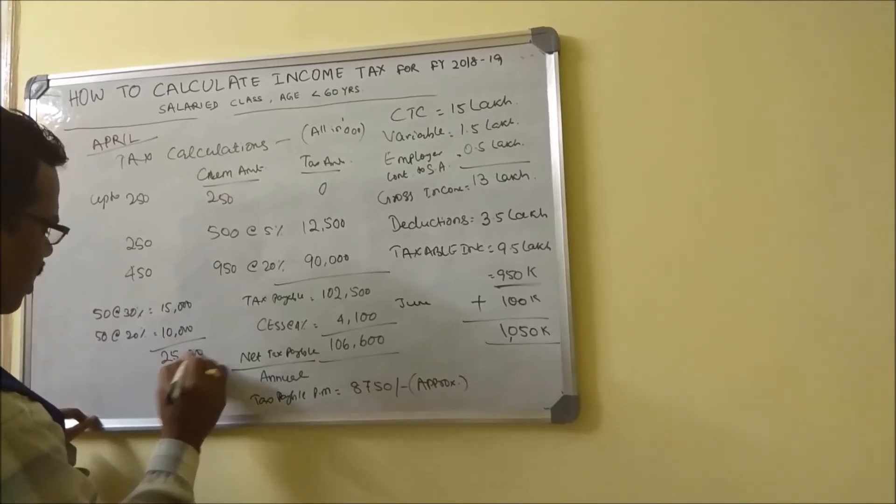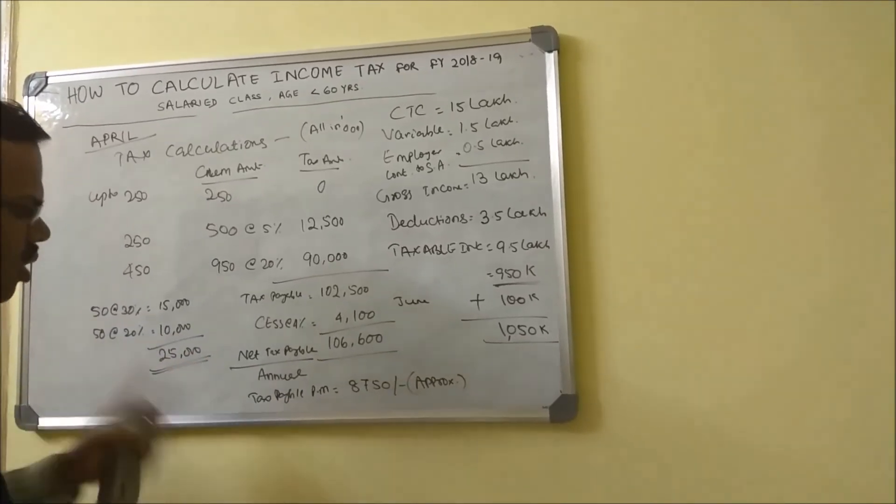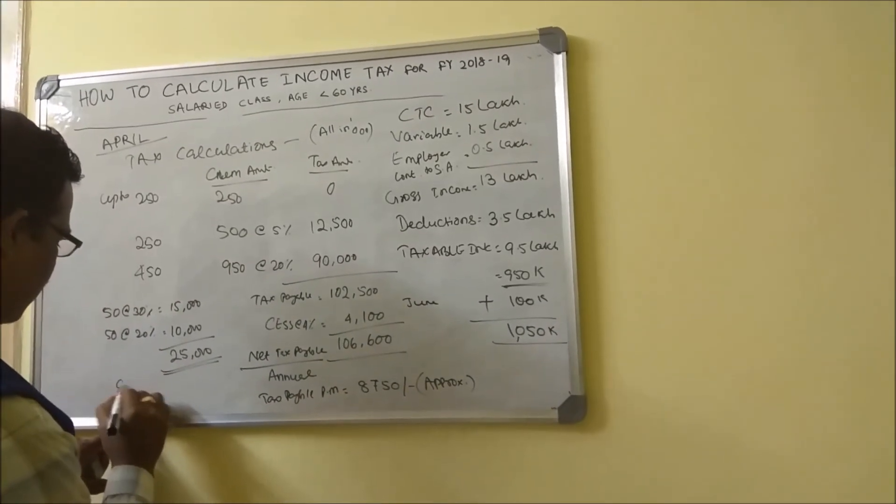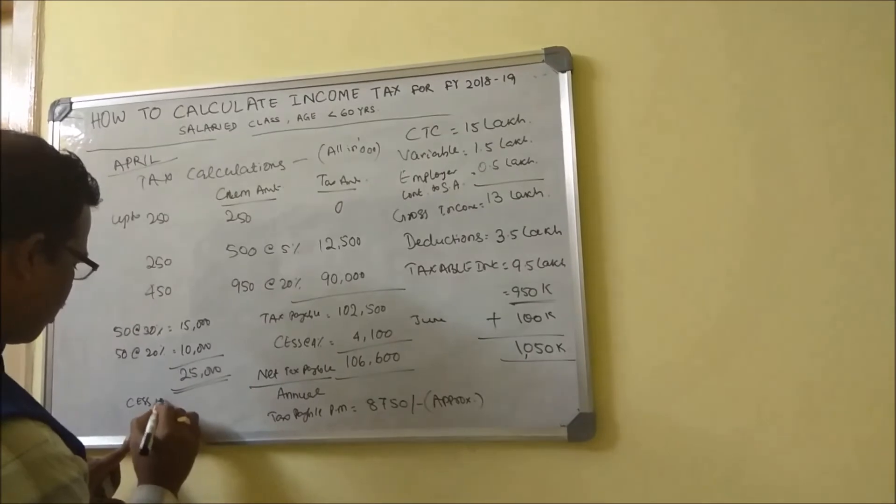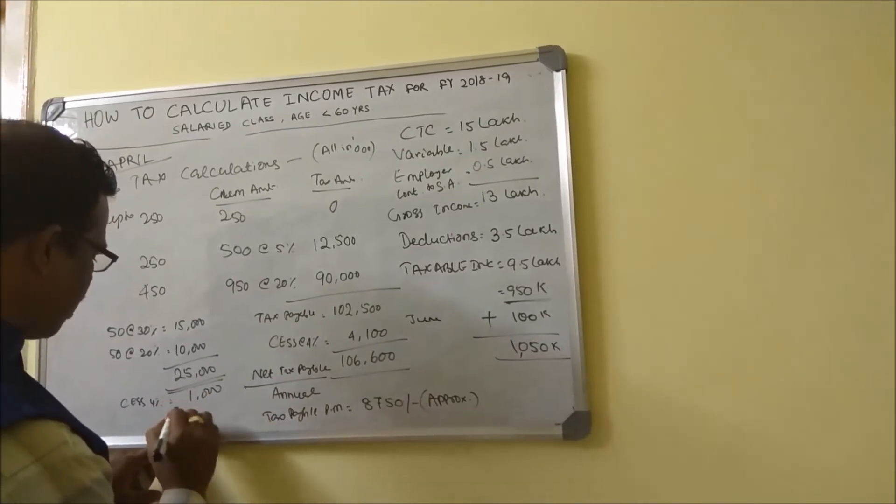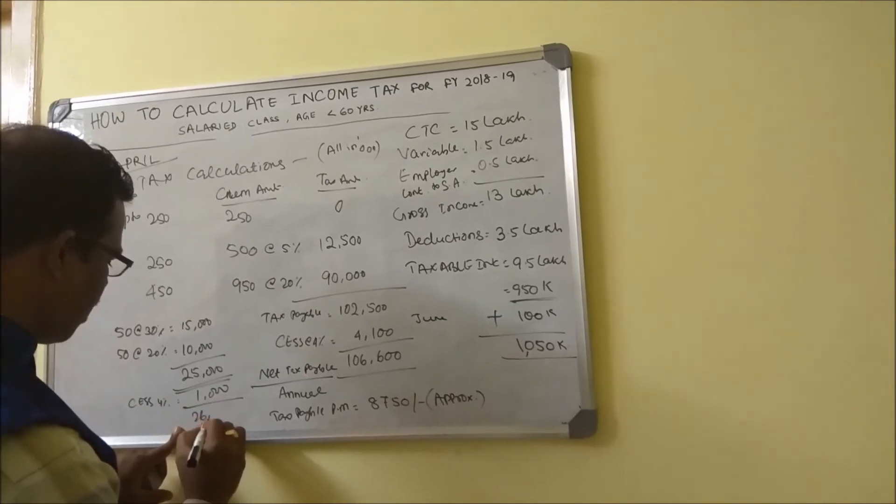Put together, 25,000 is your additional tax burden. On top of that again you have cess of 4 percent, so that means another 1,000 rupees, so that comes to 26,000 of additional tax.